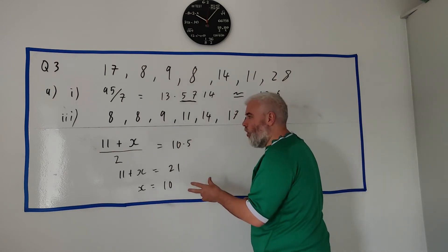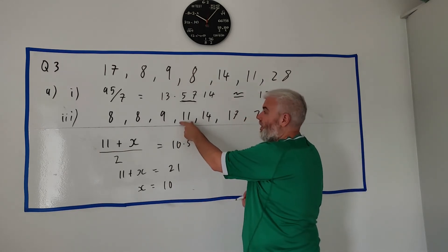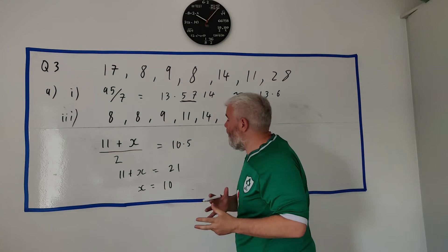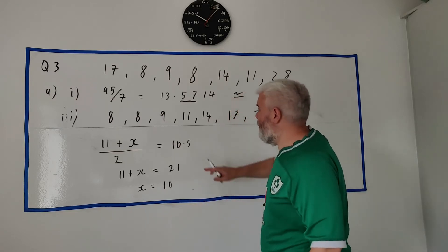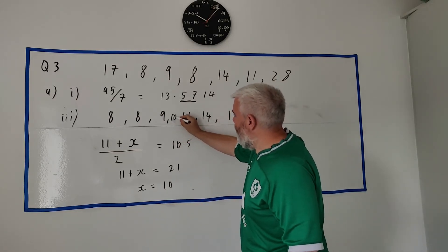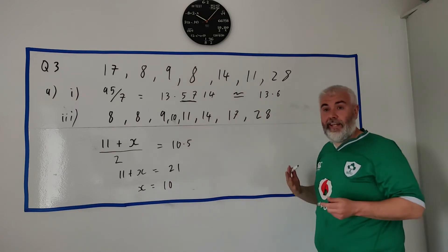Take 11 from both sides, that disappears. 21 minus 11 is 10. 10 is the only number that when it joins with 11 will give us 10.5, so the missing number must be 10. We go ahead and squeeze that in there - that's it, that's the missing number and that's where it goes.